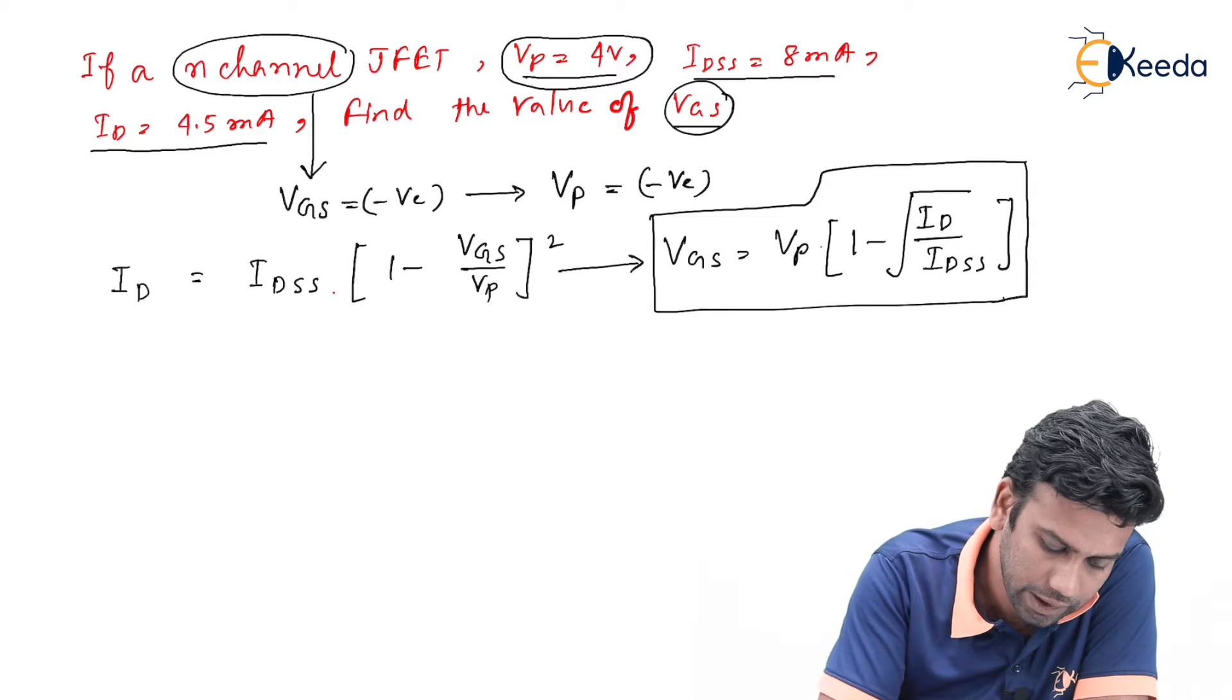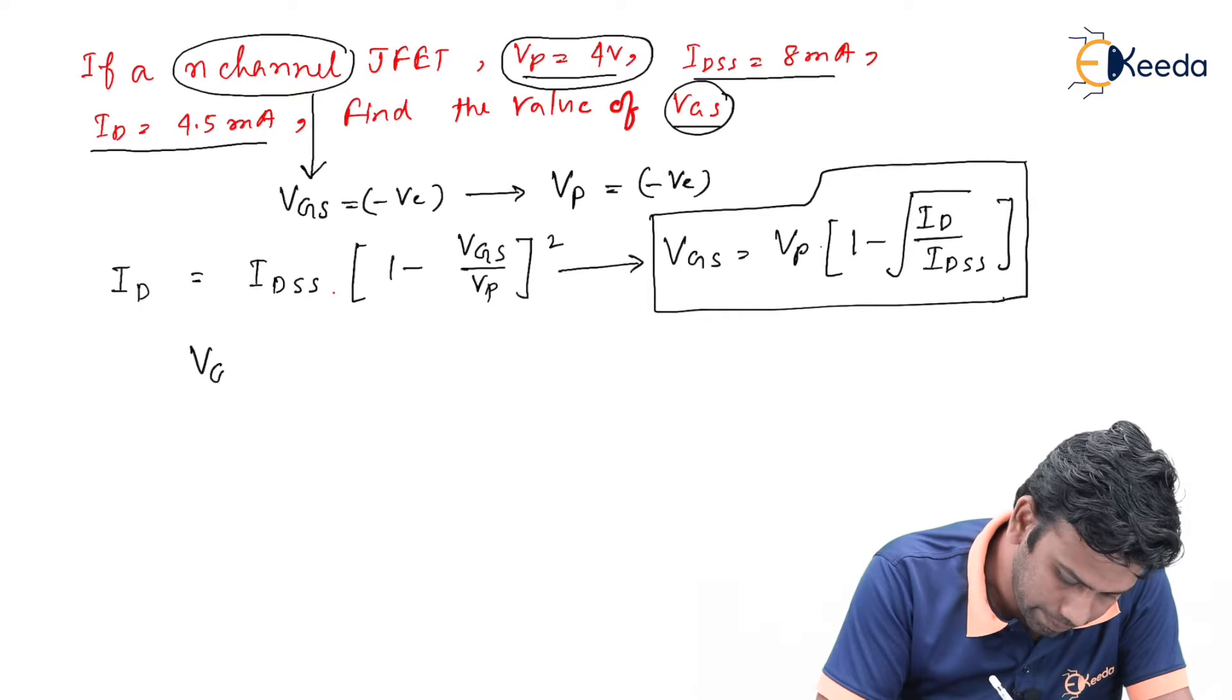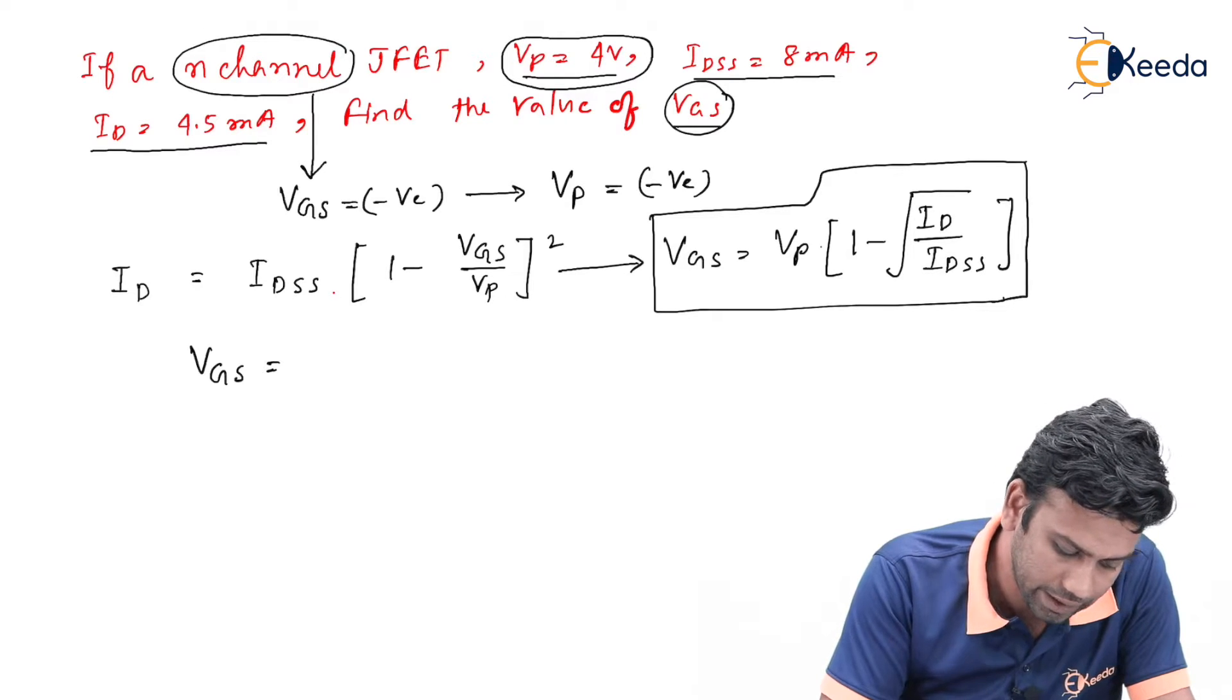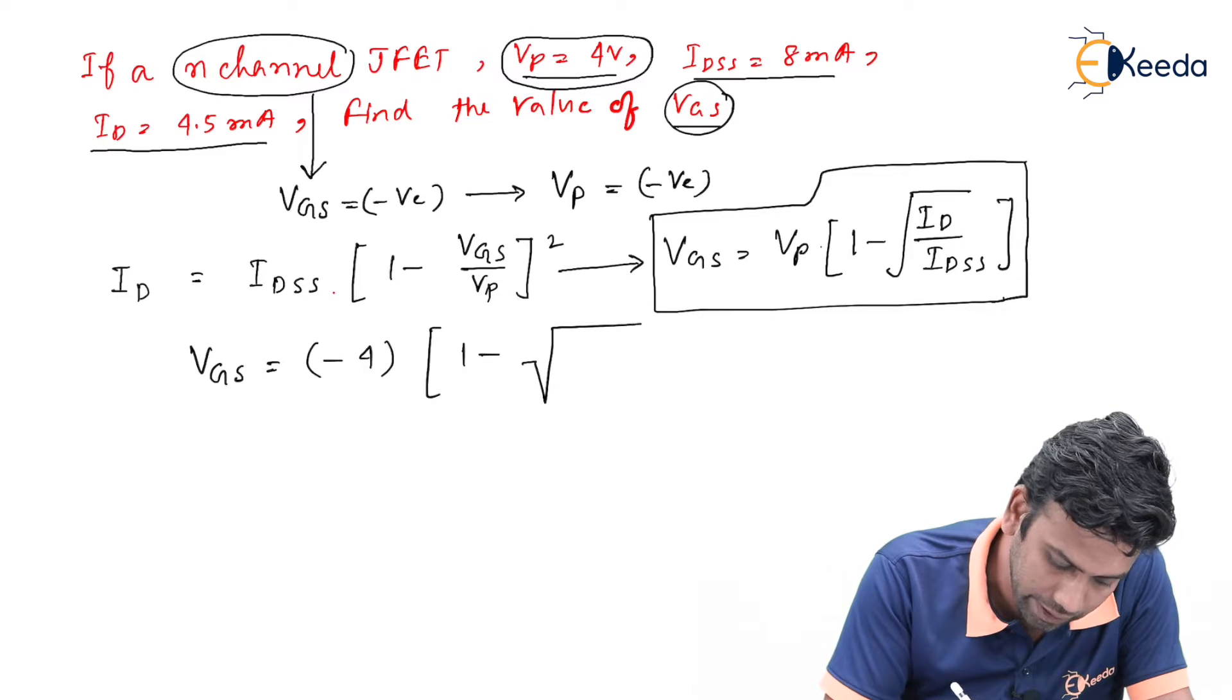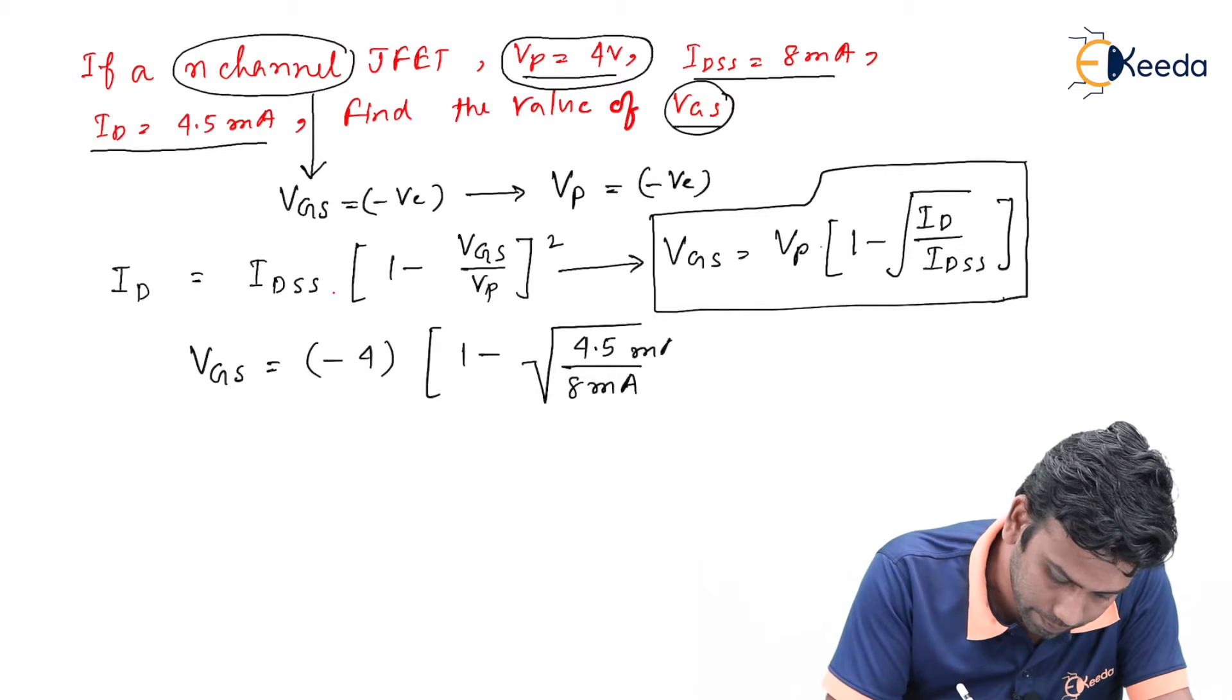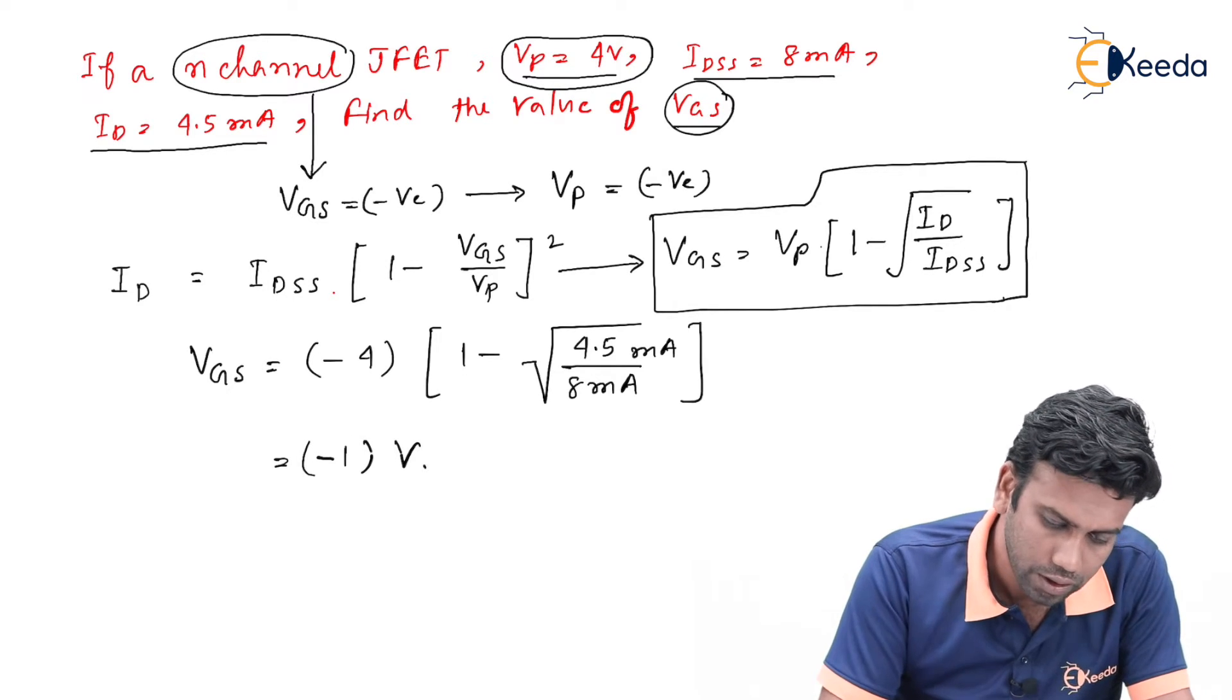Now, in the numerical, Vgs value has to be determined. The value of Vp has been given as 4 volt and we know it is an n-channel, so Vp must be minus 4 volt. Substituting, 1 minus square root of, ID value has been given as 4.5 milliampere and IDSS is 8 milliampere. So calculating this, we can find that the Vgs value is minus 1 volt.